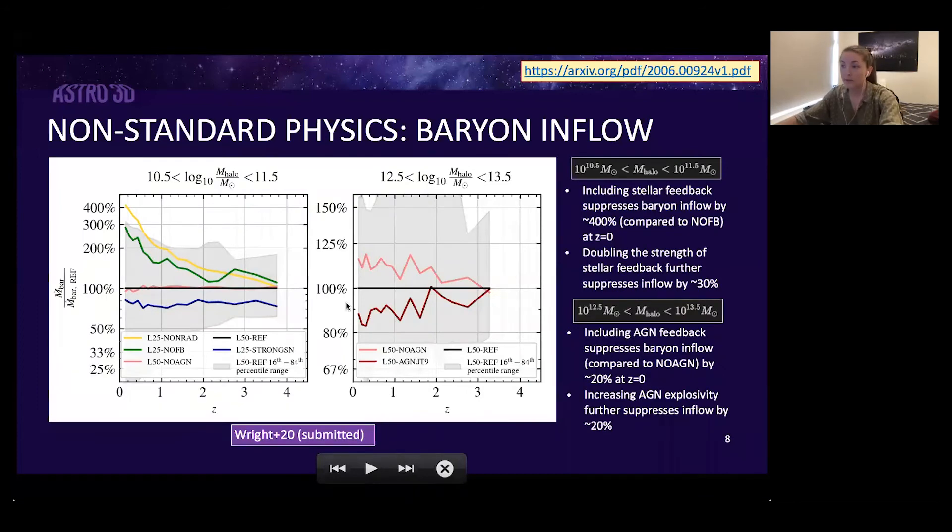We then took this a little bit further and actually varied the implementation of stellar and AGN feedback to see what differences in gas inflow this makes in the relevant mass ranges. Each of the panels that you're seeing is the baryon inflow rate in the given run, essentially normalized by the baryon inflow rate in the reference run so as to bring out the differences. The left panel is a lower halo mass bin where we looked at what happens when we strengthen stellar feedback compared to reference physics. That's the blue line here. You can basically see that across redshift, this strengthening stellar feedback seems to increase or reduce baryon inflow by a further 20 to 30 percent.